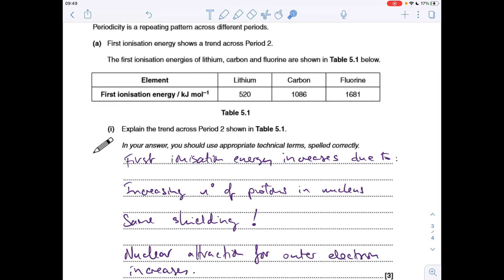Question six, so you can obviously see that the first ionization energy is increasing. That's due to, we've kind of already said this for the decrease in atomic radius across a period, increase in number of protons in the nucleus, same shielding, don't forget to say that. So therefore the nuclear attraction for the outer electron, that's the one that's removed, increases.